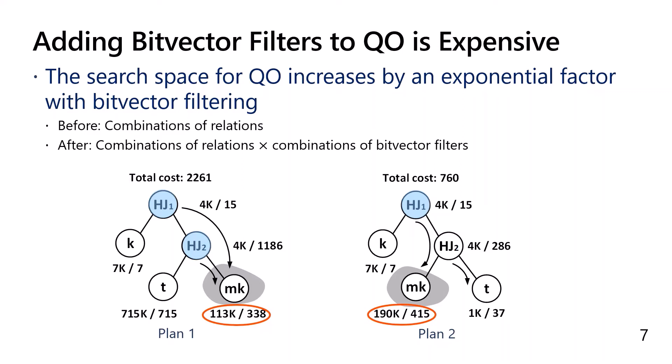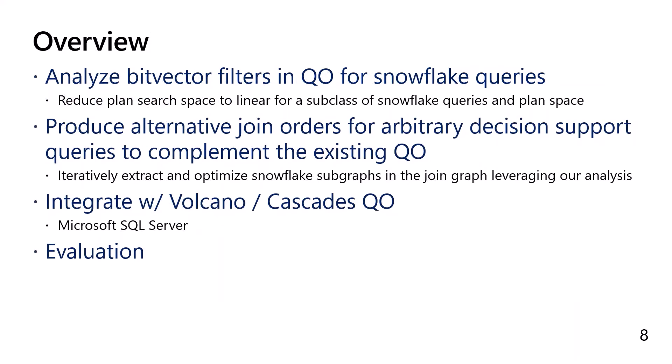We know we have left big opportunities on the table if query optimization doesn't consider bitvector filters, but adding bitvector filters simply blows up the search space. In the rest of the talk, I first focus on the important snowflake queries, and I walk you through how halving the bitvector filters turns out to reduce the query plan search space for a subclass of snowflake queries and plan space. I will then describe how we leverage this finding to produce alternative join orders that complement the existing query optimization for arbitrary decision support queries.